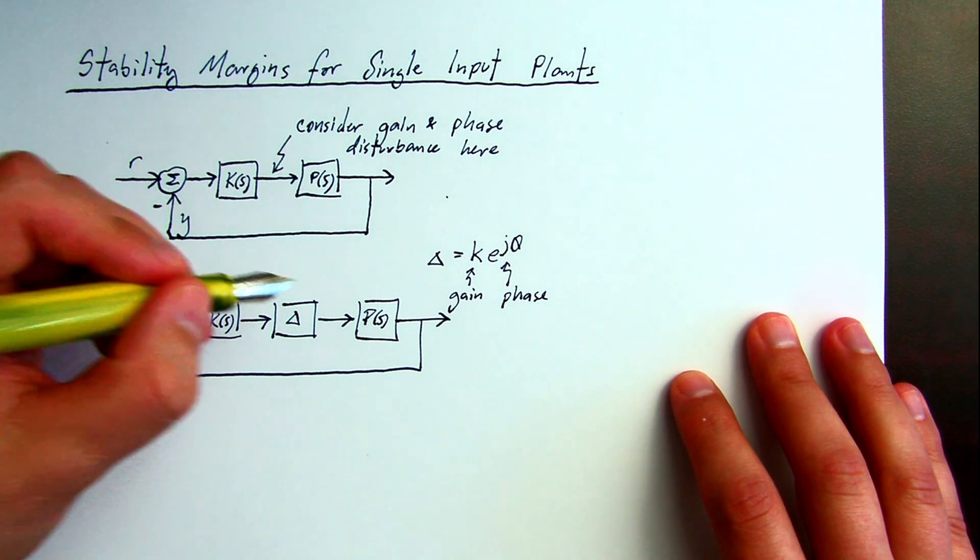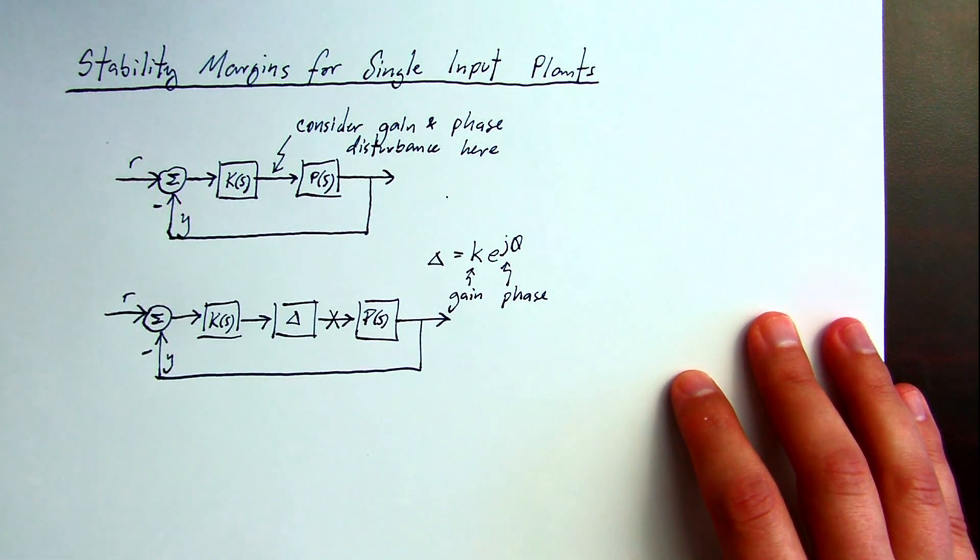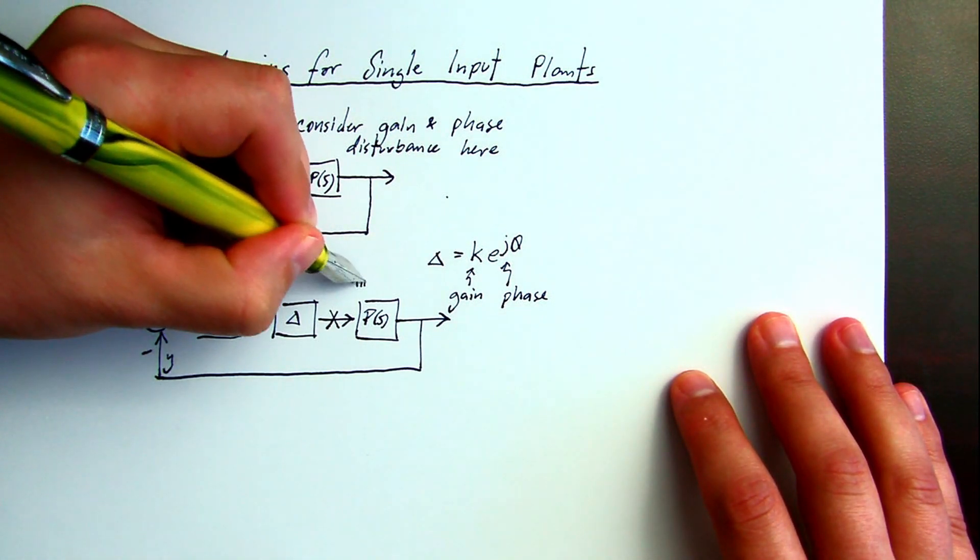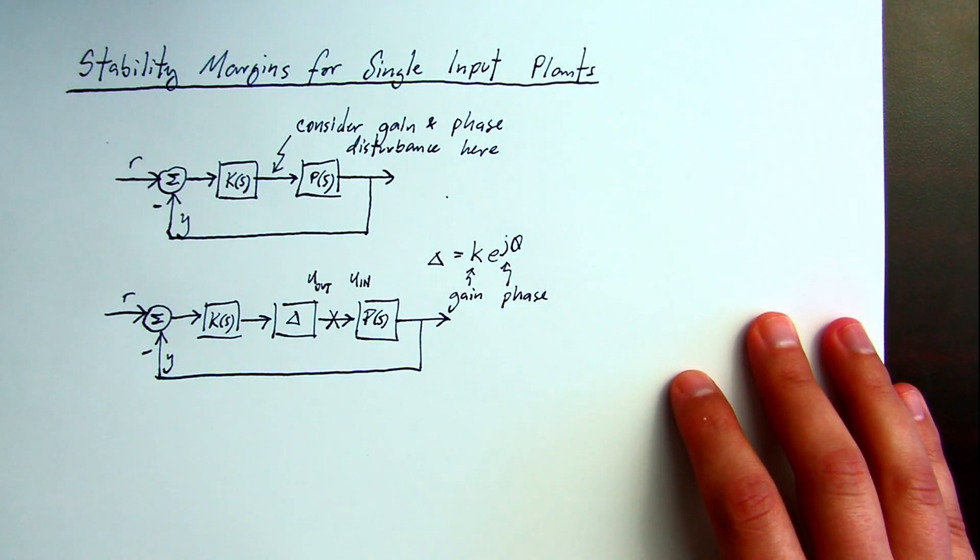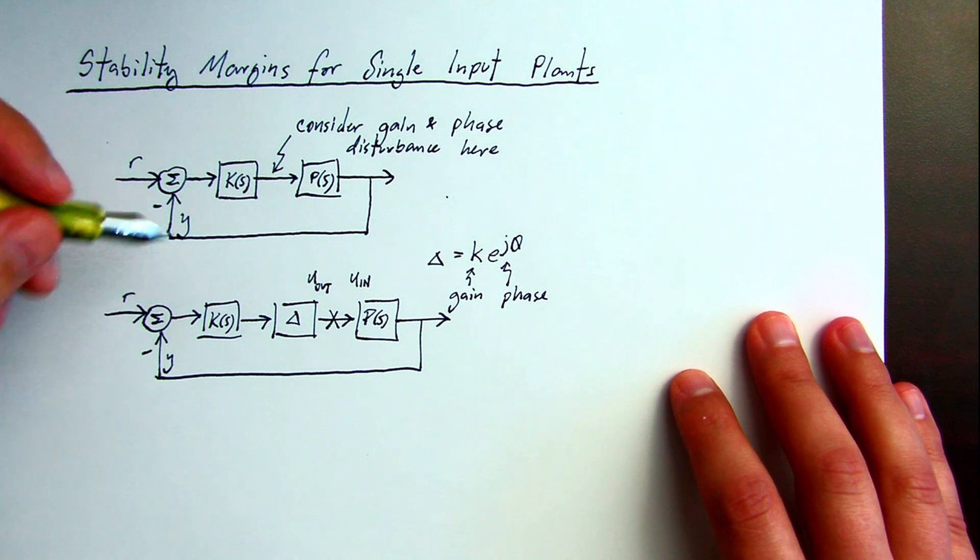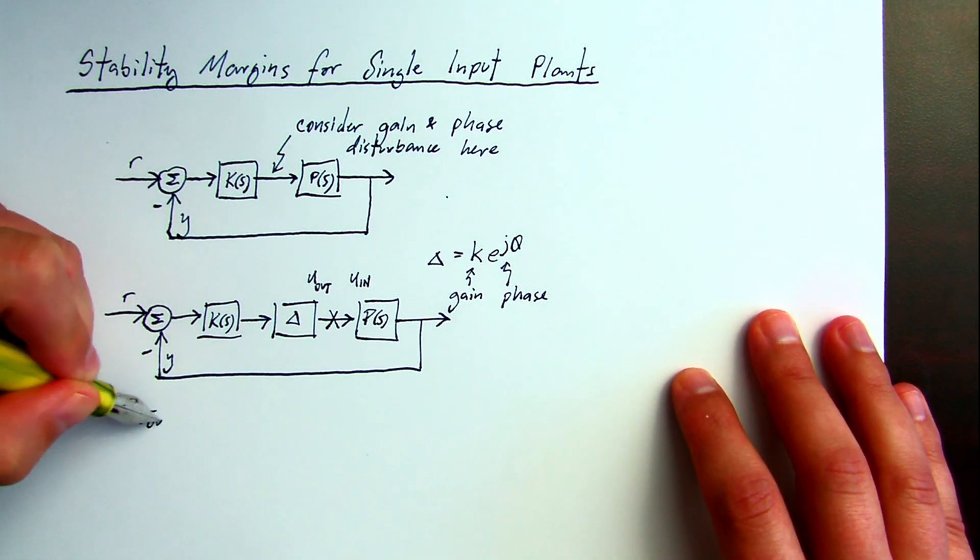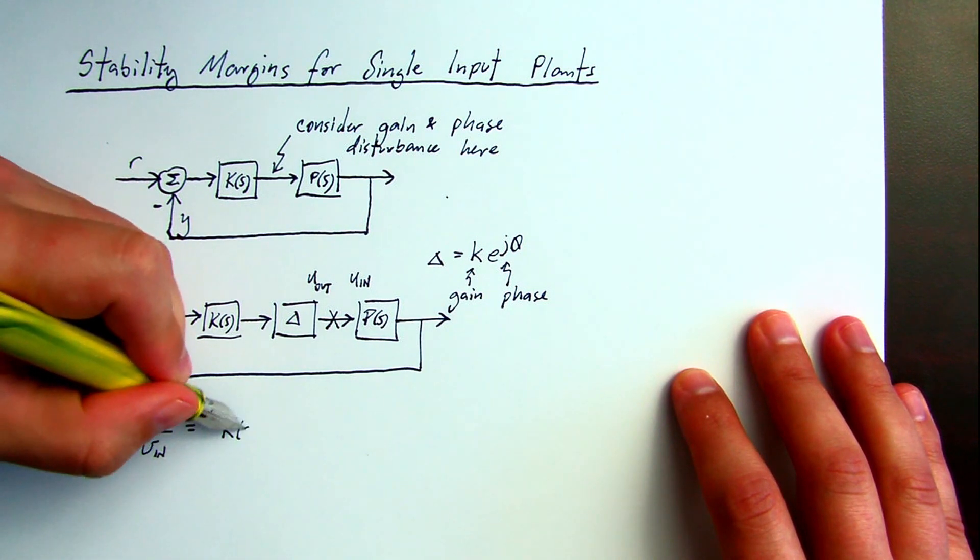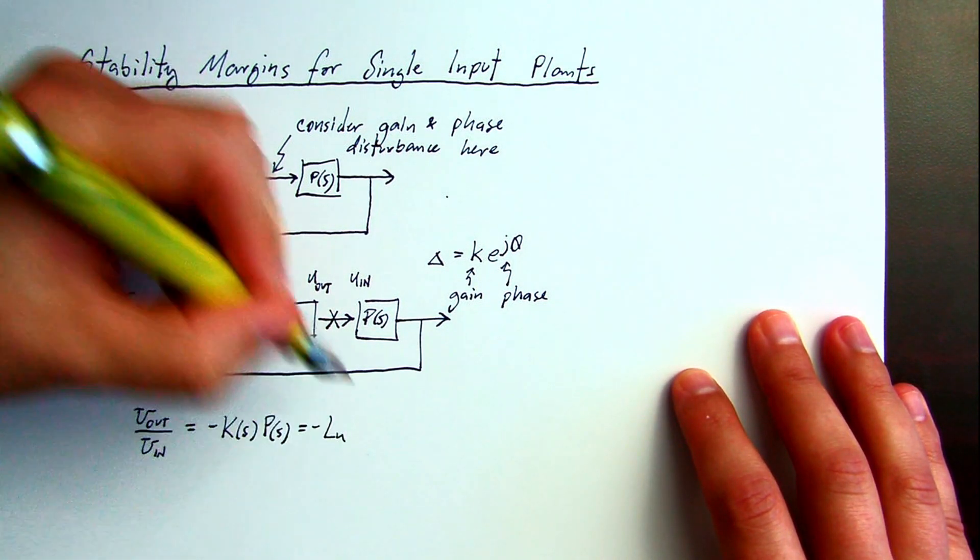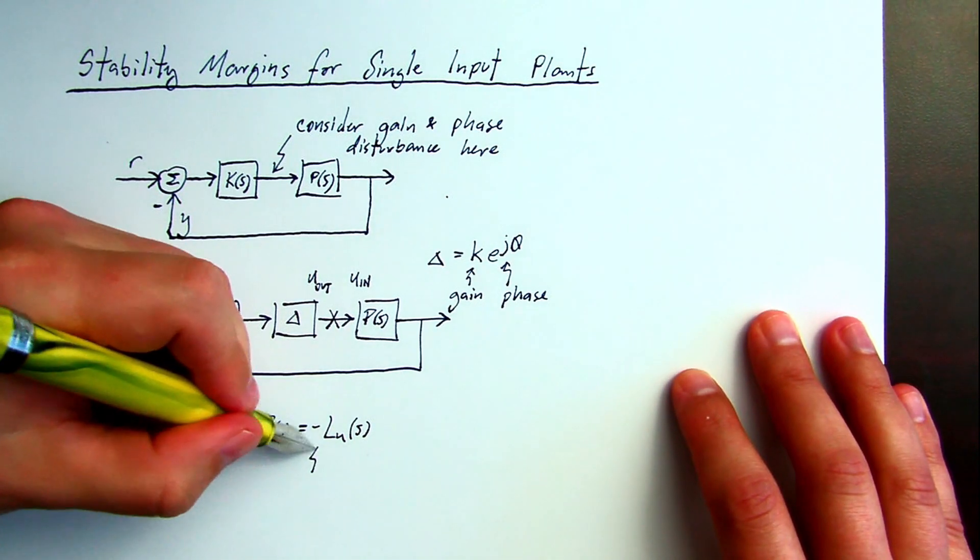An important transfer function for stability margins is the loop gain. We can get the loop gain by breaking the loop at the plant input, looking at the transfer function of U out over U in, neglecting the reference command R.